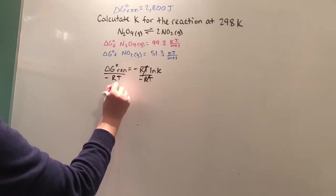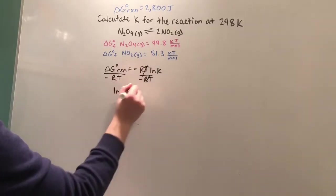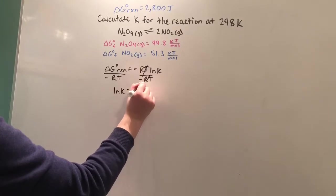And we'll get ln K equals ΔG reaction over negative RT.